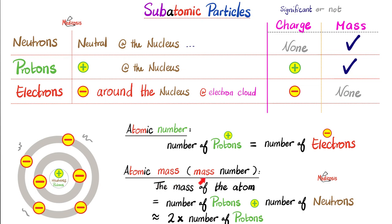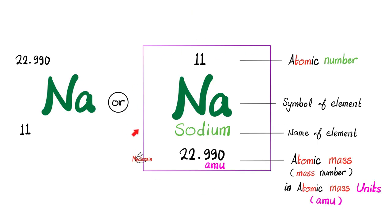How about the atomic mass? Look underneath the sodium symbol. You'll find 22.990. That's the atomic mass or the mass number — roughly speaking, the number of protons plus the number of neutrons. But why is this not a whole number? Because this number is a weighted average of the naturally occurring isotopes — and we'll talk about this soon.